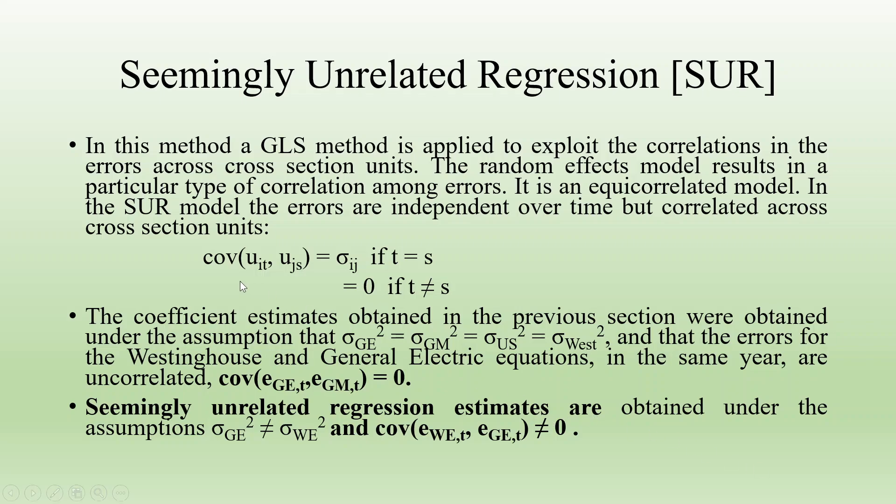So you can see here, the covariance between mu_it and mu_js is sigma_ij if t equals s, and it equals 0 if t is not equal to s.